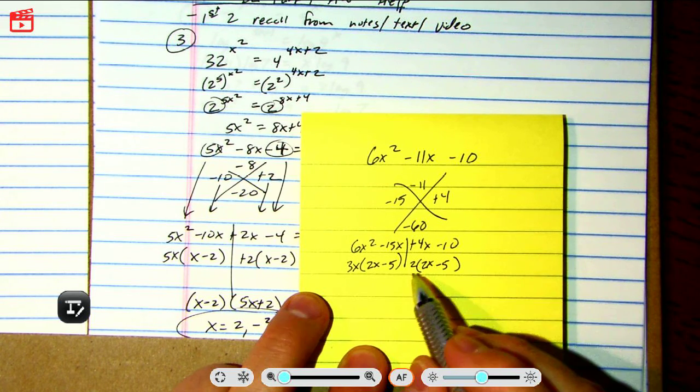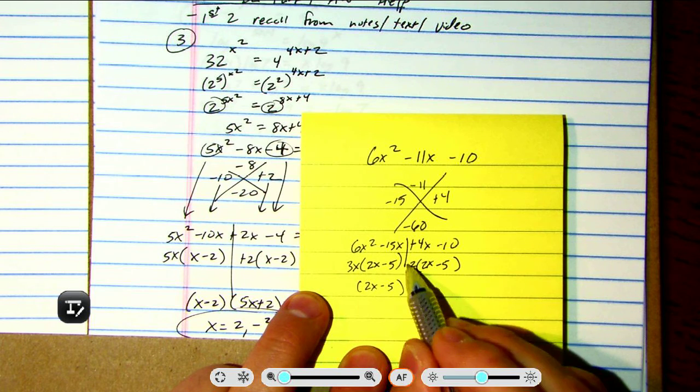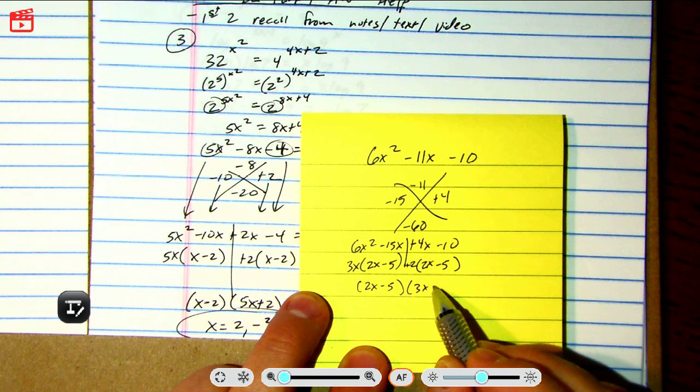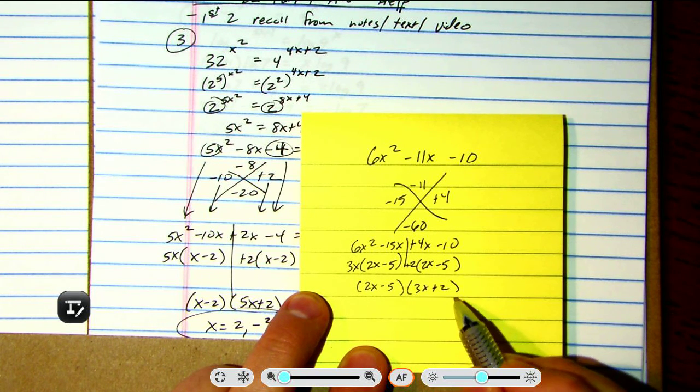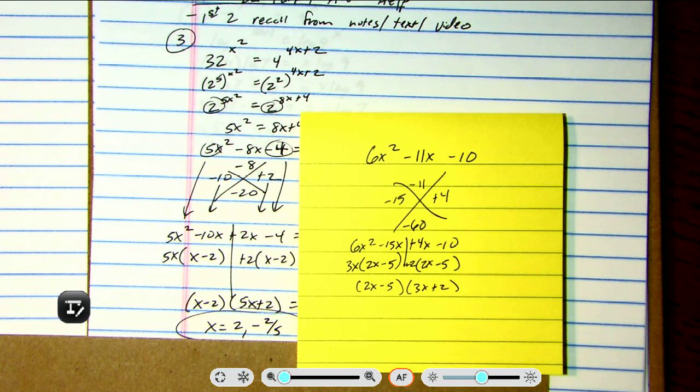Okay, so the GCF is 2x minus 5, and what's left over is 3x plus 2. And if you were to multiply those back together, do a double distribution, you would find out it equals that. Okay, that was one homework problem, long video.